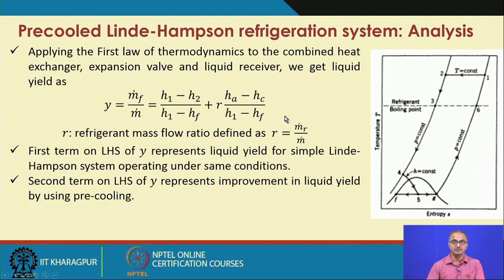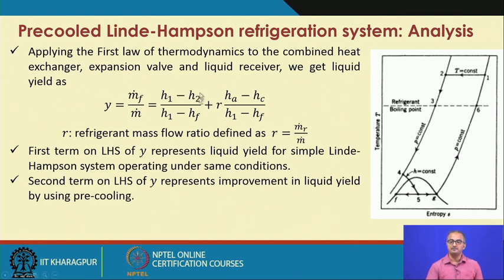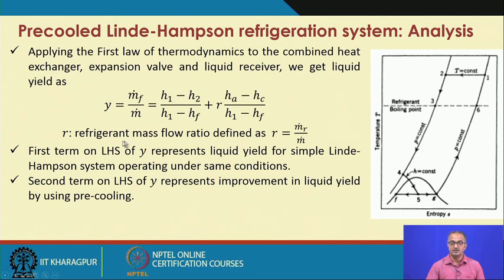The work done and heat rejected will be the same as before; the additional thing in this case is the liquid yield. Applying the first law of thermodynamics to the system gives the expression for the yield. The first term is the same as in the simple Linde-Hampson; the additional term involves R, which is the refrigerant mass flow ratio — similar to the pre-coolant mass flow ratio in the pre-cooled Linde-Hampson refrigeration system.